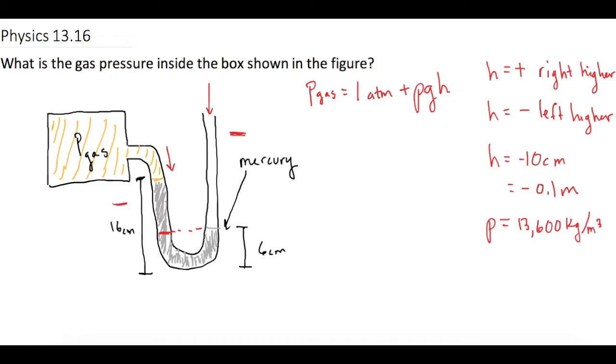But for the pressure, the 1 atm, we actually don't want that in ATMs. We want that in pascals. So the book tells us that 101.3 kilopascals is 1 atm. So if we times that by 1,000, we get 101,300 pascals is equal to 1 atm.